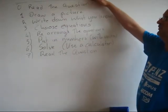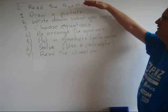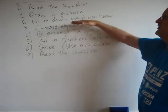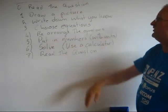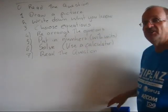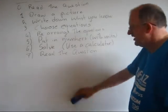So, read the question, step zero. To read the question, figure out what's going on. Draw a picture. Write down what you know. Choose equations. Rearrange the equations. Put the numbers in with the units. Solve. Read the question. So let's actually try this on an example.